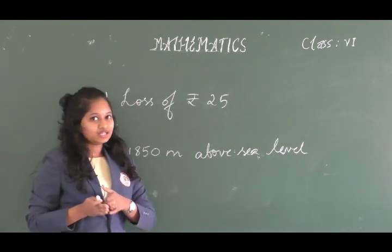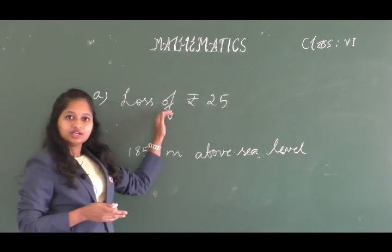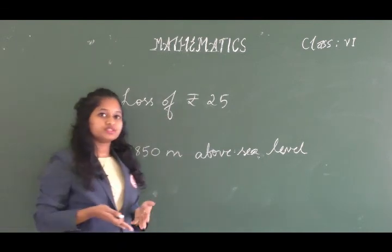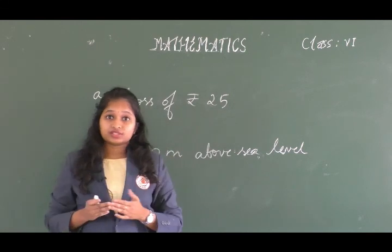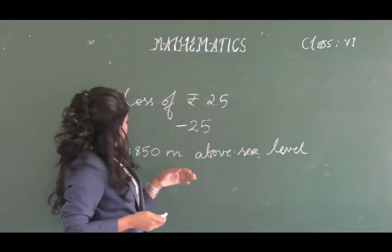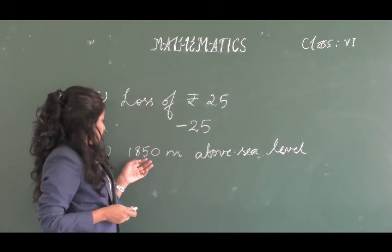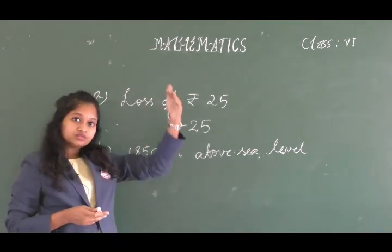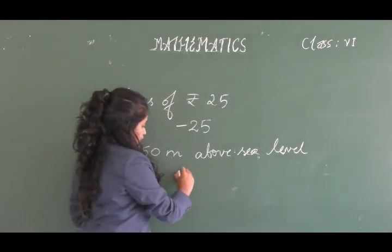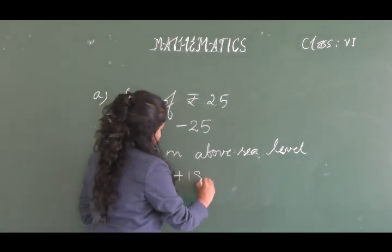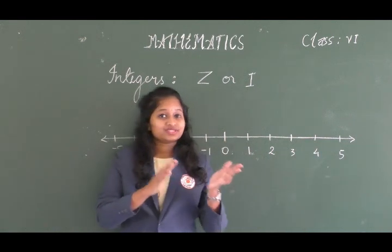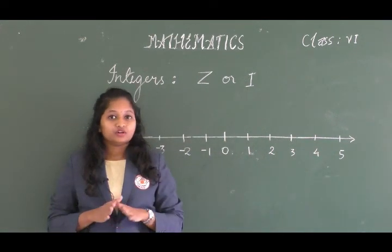Here are two examples. Loss of rupees 25 means a decrease, so you represent it as minus 25. Another example: 1850 meters above sea level means an increase, so you place a positive sign in front of the number.